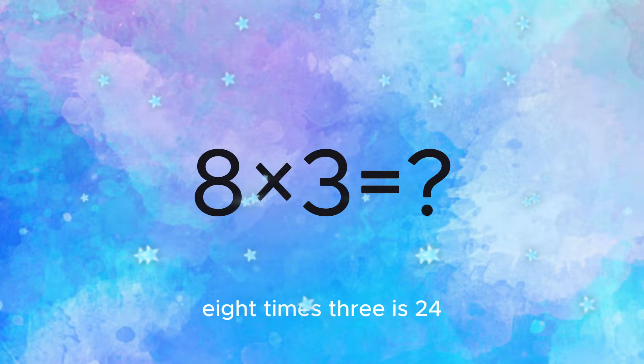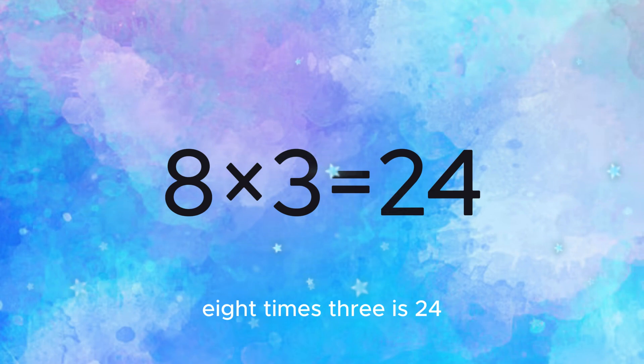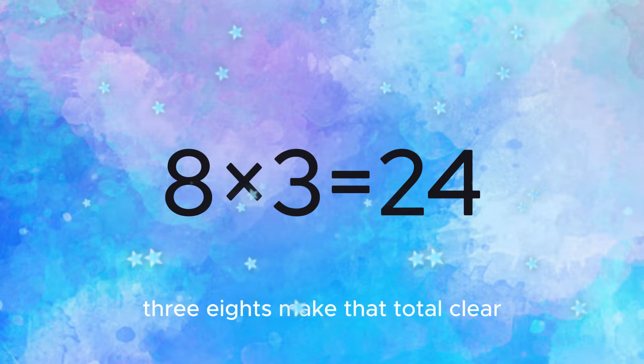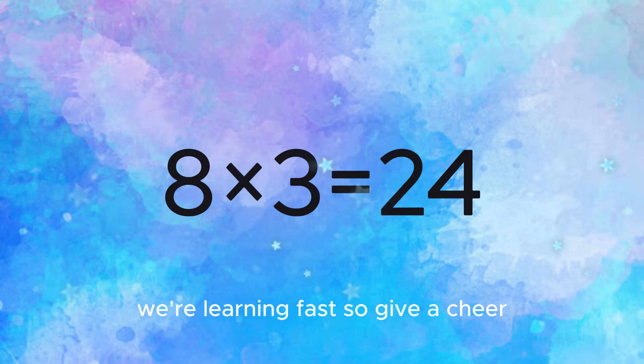8 times 3 is 24. We're climbing up, let's count some more. 3 8s make that total clear. We're learning fast, so give a cheer.